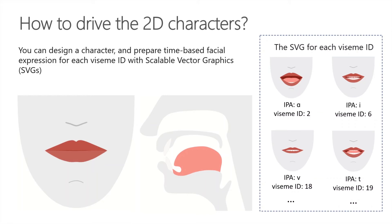After obtaining the Viseme output, you can use these outputs to drive character animation. For 2D characters, you can design a character that suits your scenario and use scalable vector graphics for each Viseme ID to get a time-based face position. With temporal tags provided by the Viseme event, these well-designed SVGs will be processed with smoothing modifications and then provide robust animation to the users. For example, this red-lipped character is designed for language learning.